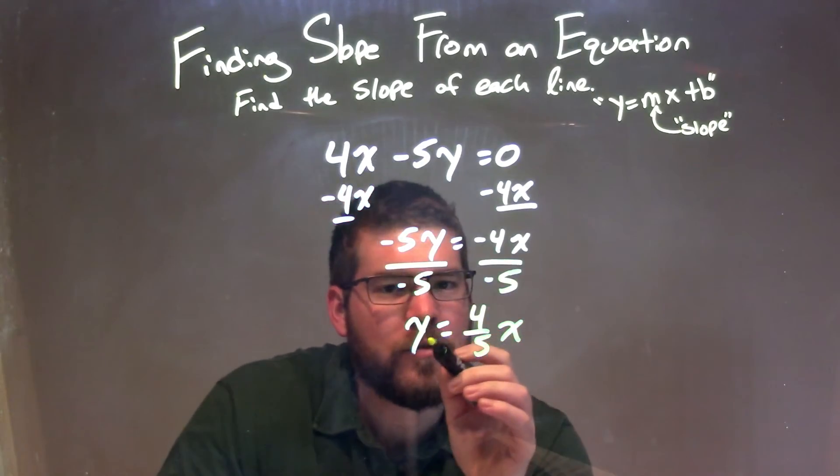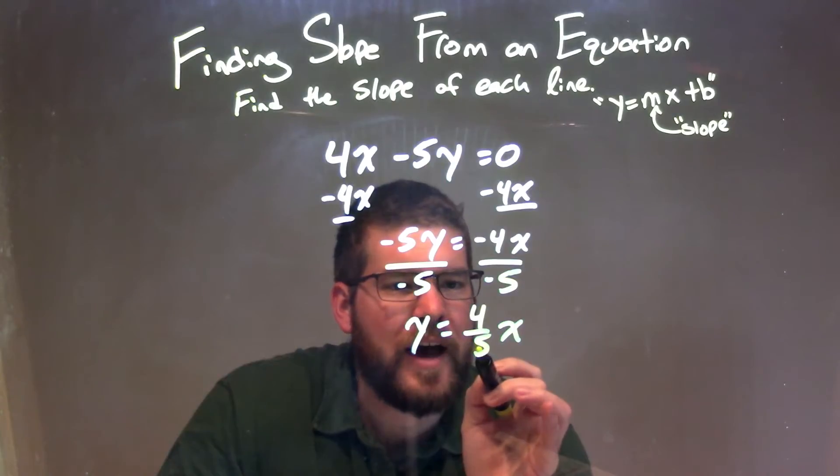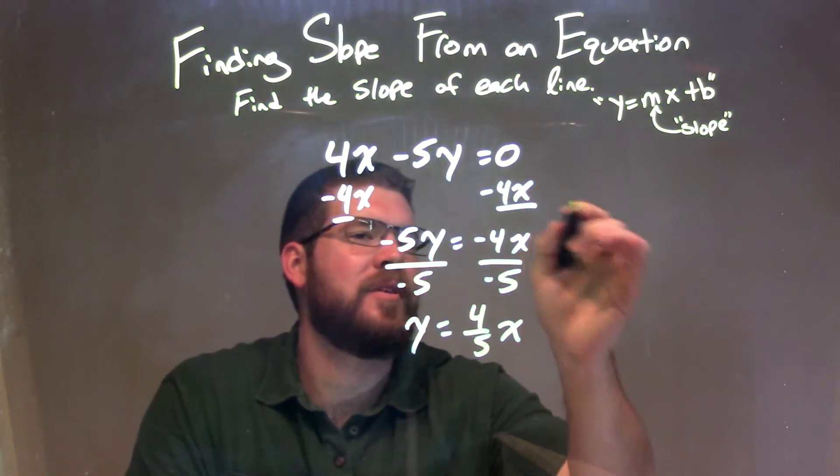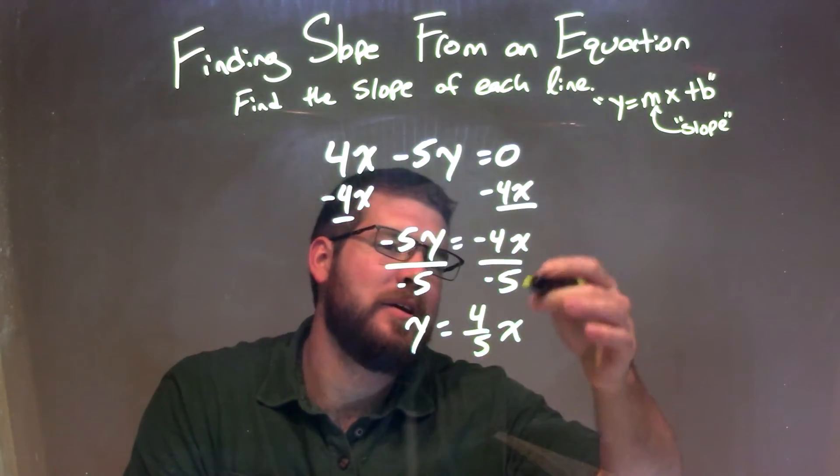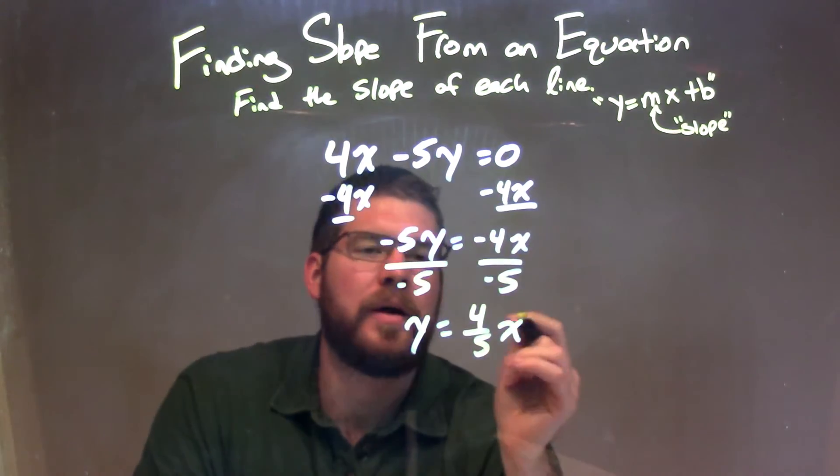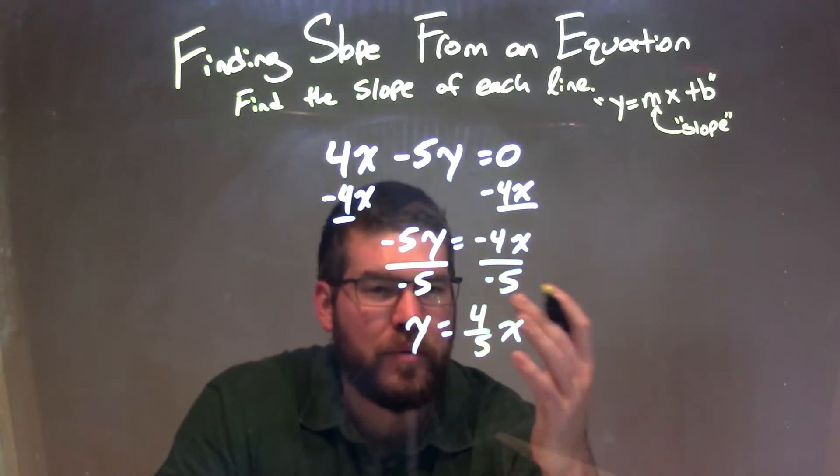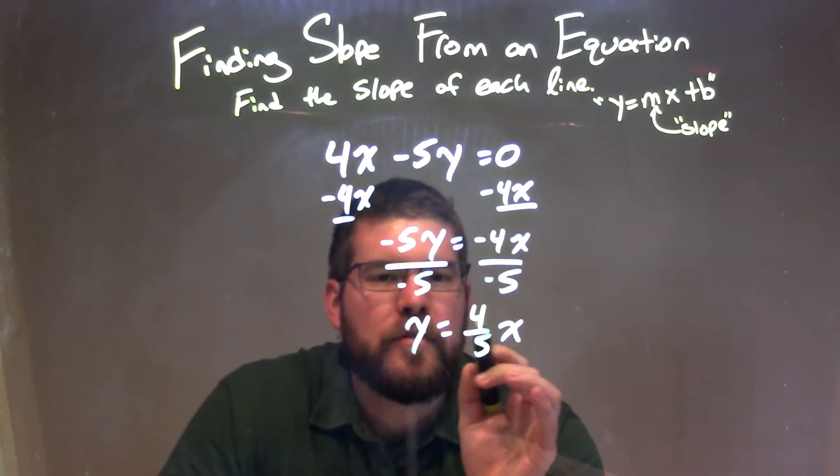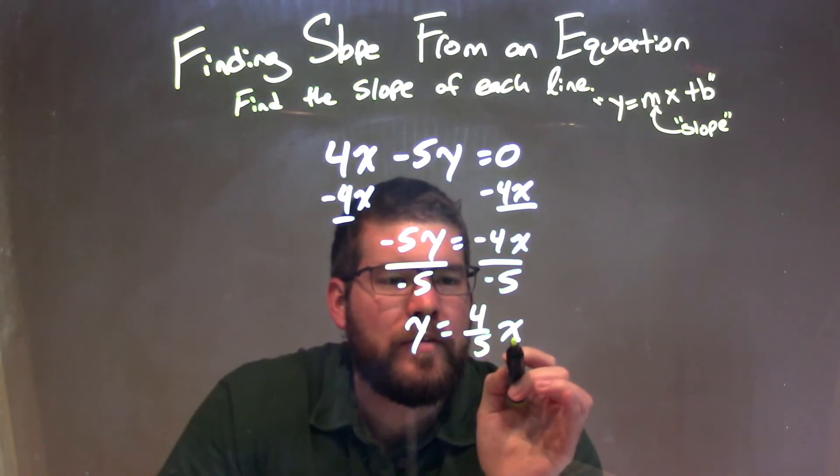So now we have our slope intercept form, y equals mx plus b. Plus b is just that 0. We could have left the 0 the whole way down, and then 0 divided by negative 5 is 0, so plus 0 there. But proper terminology, or proper way of writing it, we don't write that plus 0.